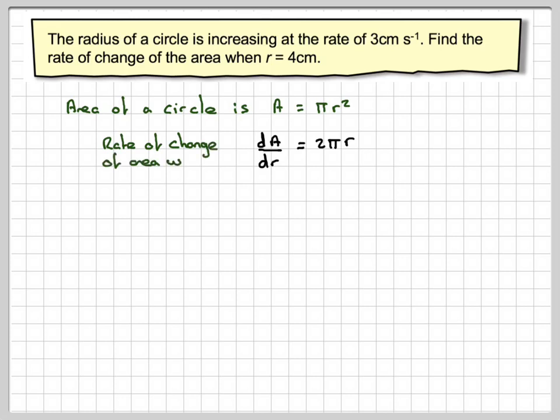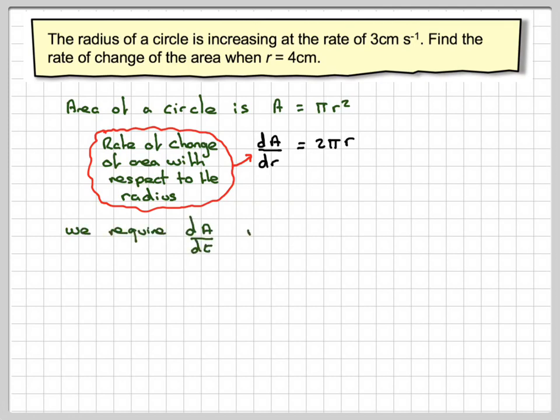This is called the rate of change of the area with respect to the radius. We're required to find dA dt, the rate of change of area, so the rate of change of the area with time t.